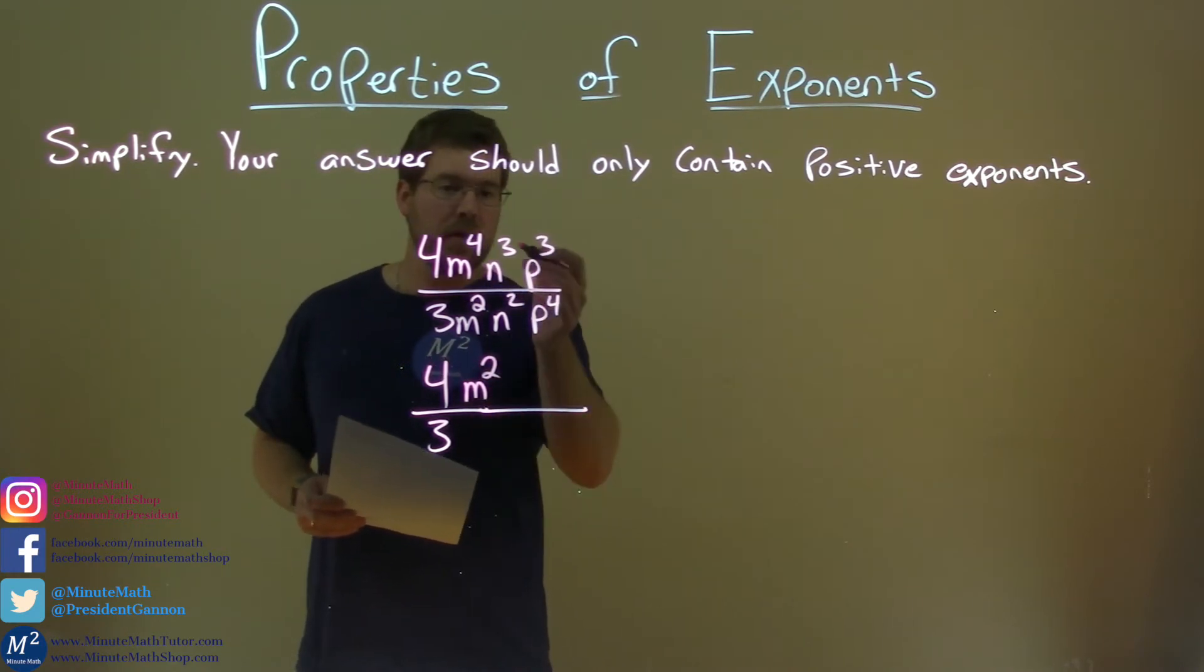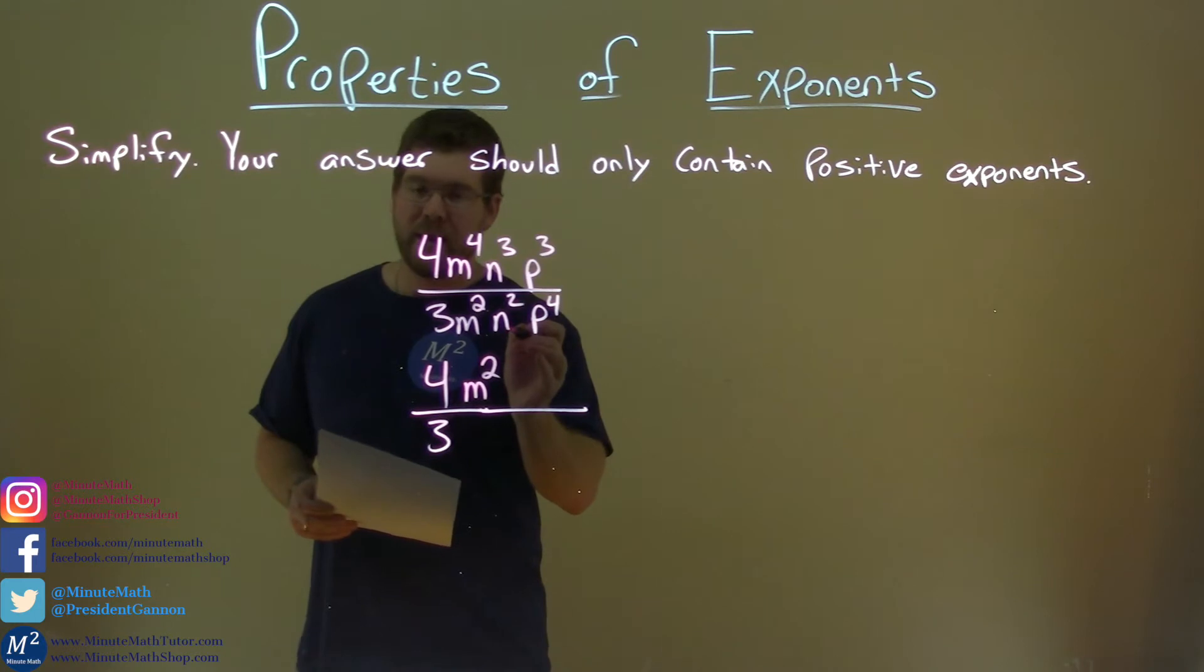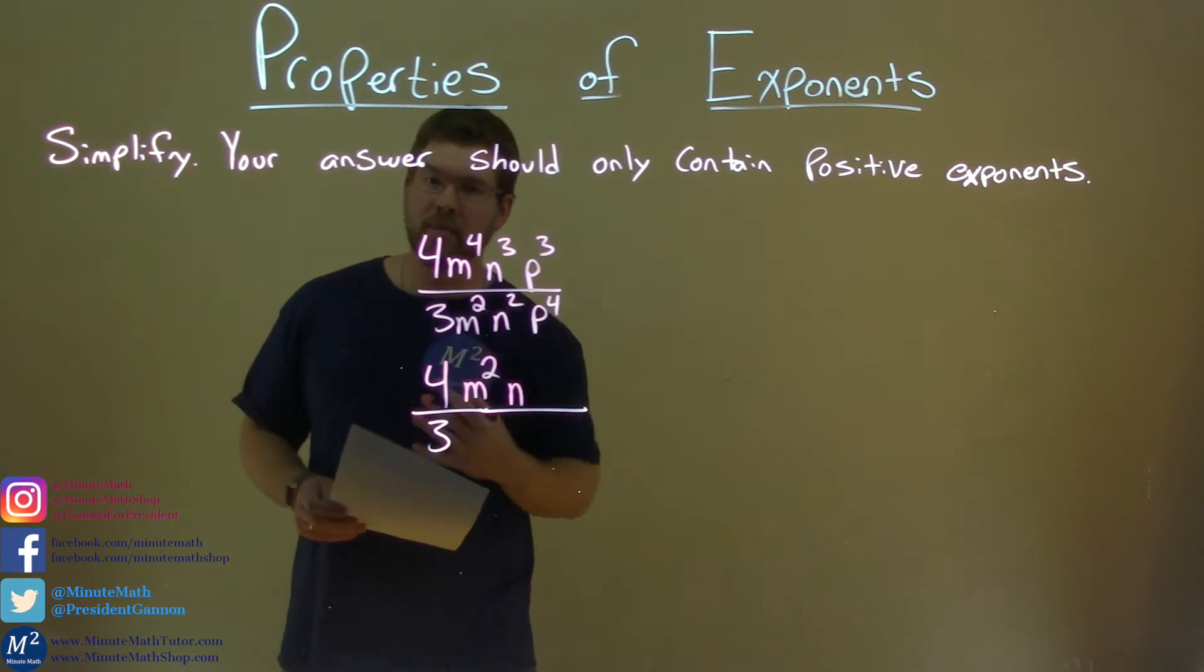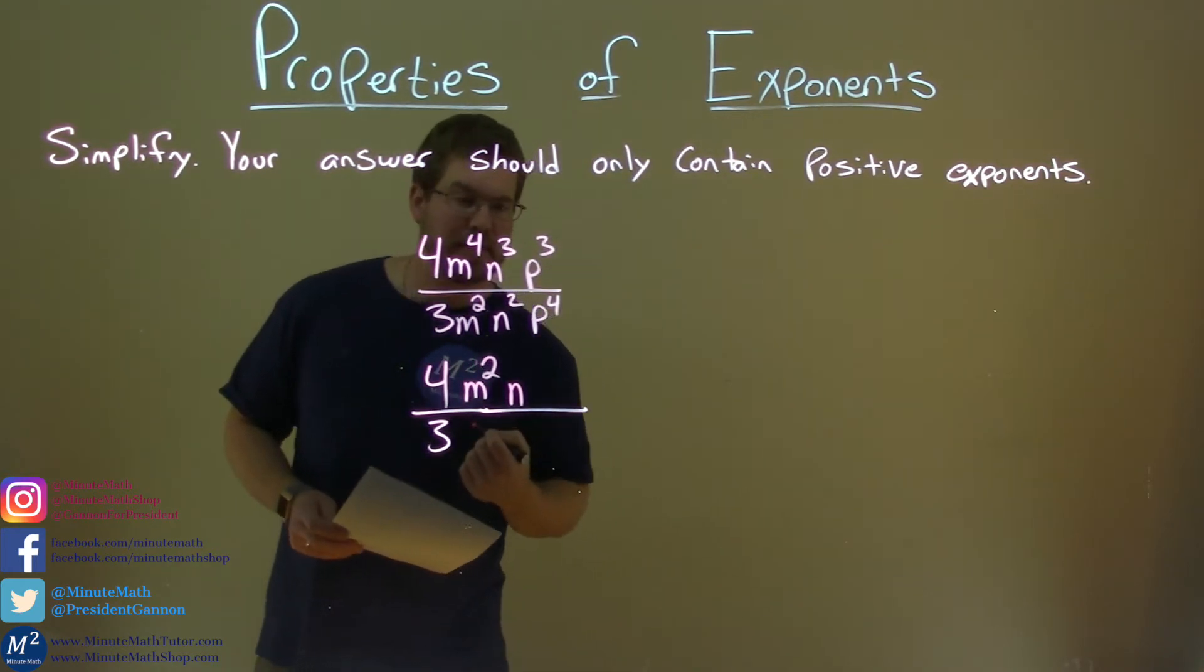Let's look at the n's. n to the 3rd divided by n squared, 3 minus 2 is 1, positive 1 here. So we have n to the positive 1 power. Again, don't need to write that exponent, keep it just as an n.